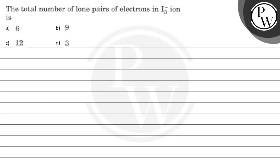Let's read this question. The question says the total number of lone pairs of electrons in I₃⁻ ion is A(6), B(9), C(12), or D(3).